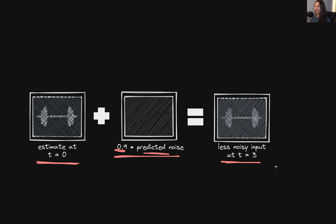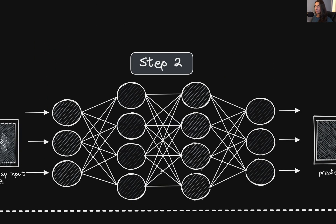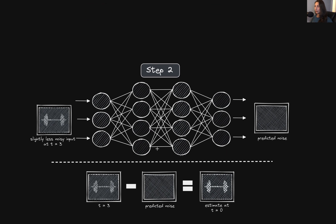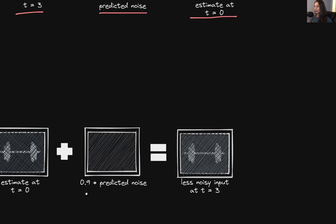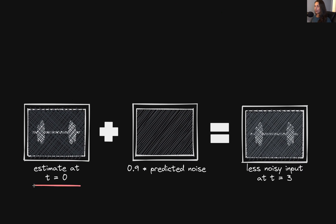So that's step one. We then take this slightly less noisy input image and pass it again to the network — this is the start of step two. We again subtract the predicted noise from this new slightly less noisy input to get an updated estimate at T equals zero. We then add back most of the noise from this step — 90% or whatever the constant value is — to the estimate, giving us an even slightly less noisy version of the input than what we had at the beginning of step two.